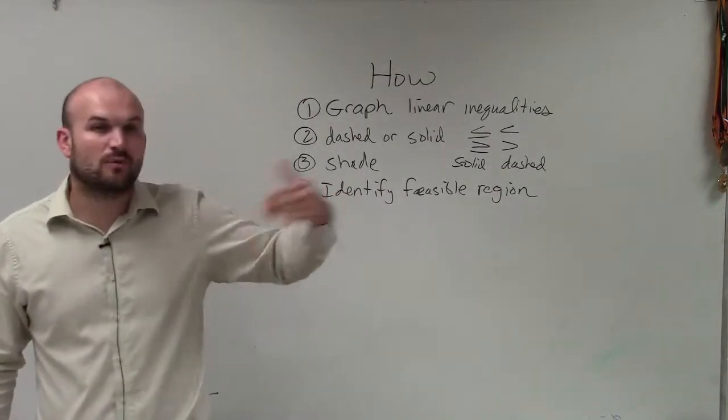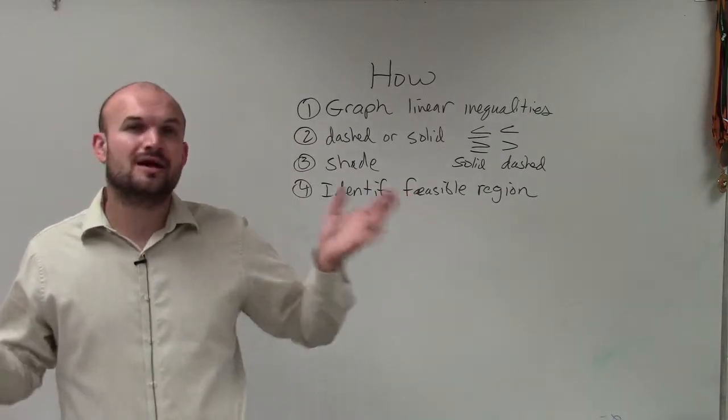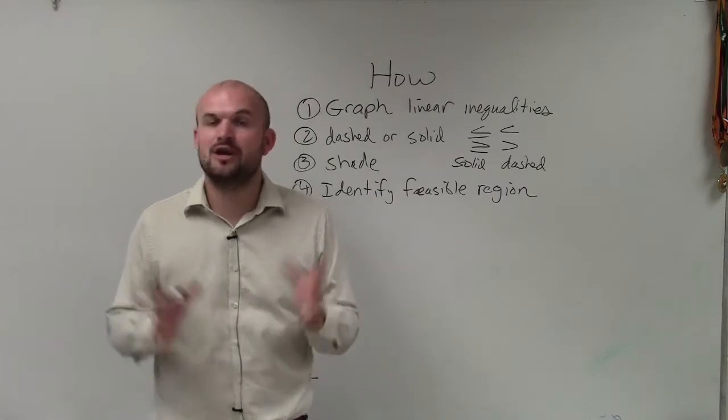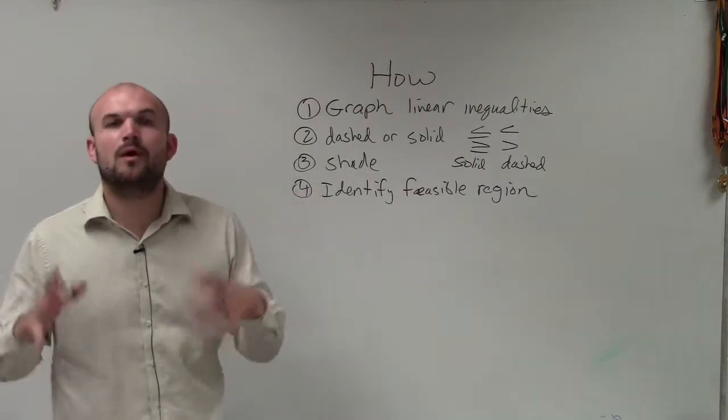Not just where it's true for one inequality or the other, but true for both inequalities. That's why I leave the shading for the feasible region where it's true for both inequalities.